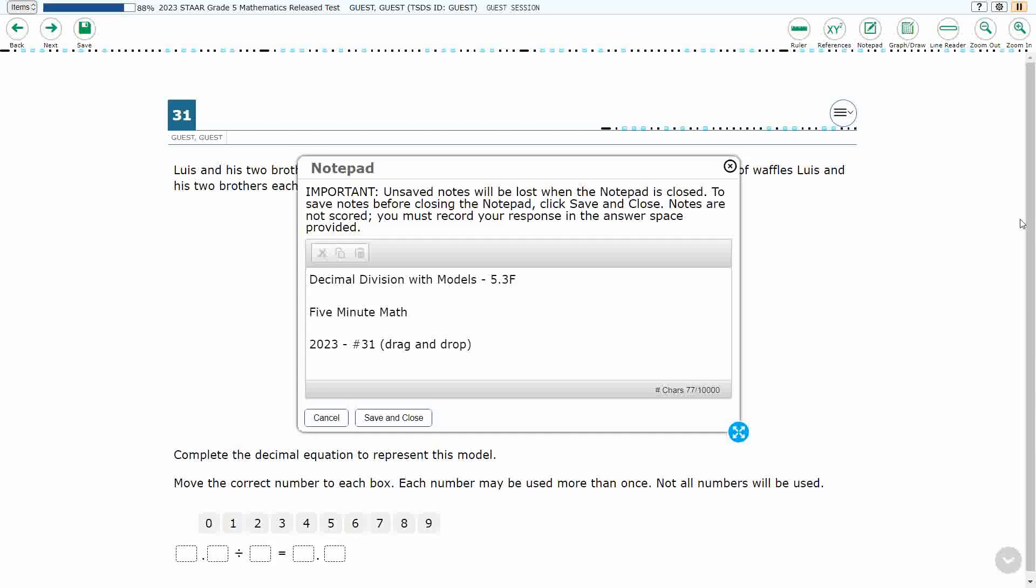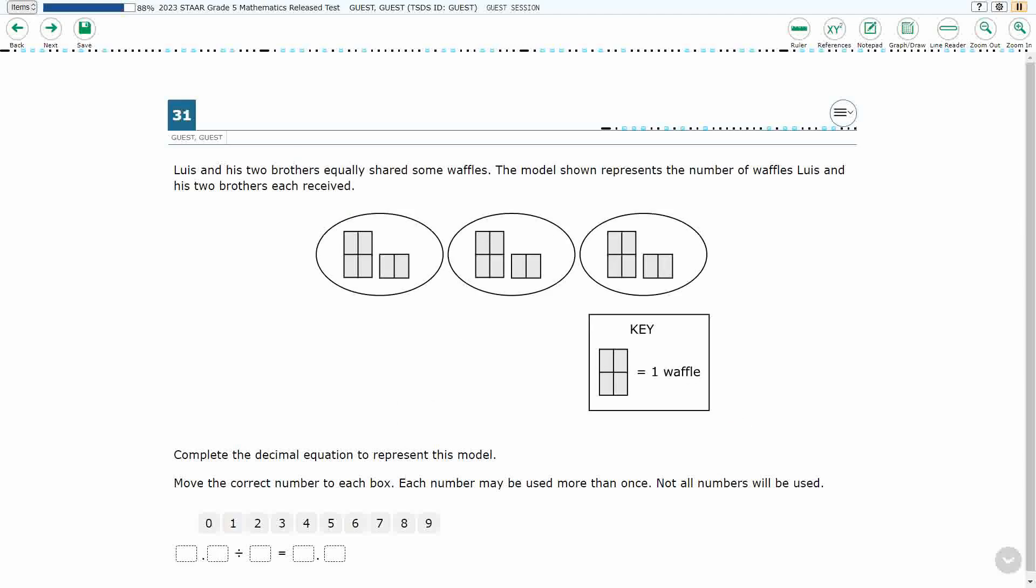Hello and welcome to 5-Minute Math. Today we are looking at the 5th grade concept of Decimal Division with Models. This is standard 5.3F in the great state of Texas and we are using item number 31, which is a new item type called drag and drop, of the 2023 released star test.